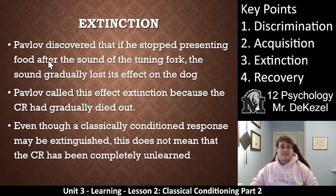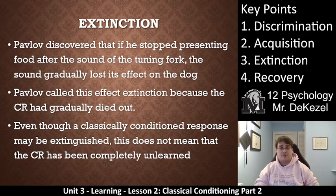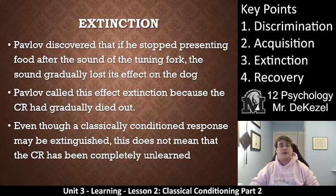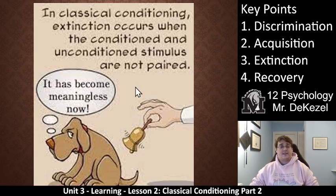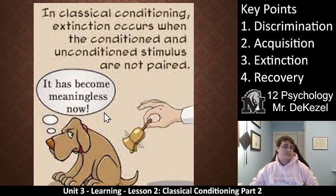Extinction is key point three. Pavlov discovered that after he stopped presenting the food after the sound, the sound would eventually lose its effect. If you stop giving your dog treats, eventually the dog will not want to shake a paw anymore. Pavlov called this extinction because the conditioned response gradually died out. Even though a classically conditioned response may be extinguished, it doesn't mean it has been unlearned — it just means the organism won't perform that behavior because it no longer expects a reward. Extinction occurs when the conditioned and unconditioned stimuli are no longer paired; the bell becomes meaningless to the dog because meat powder is no longer given.